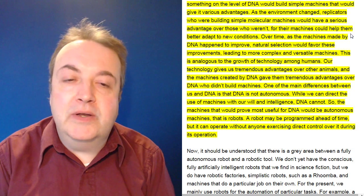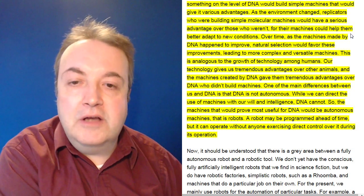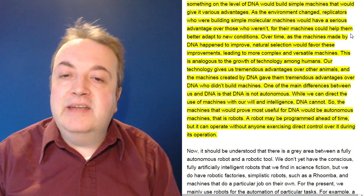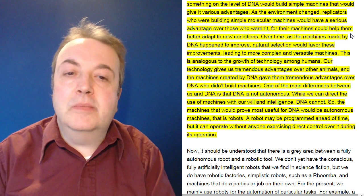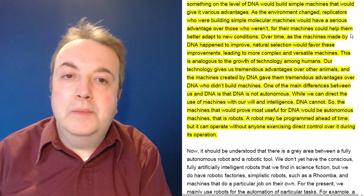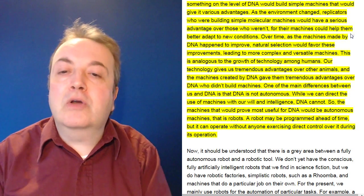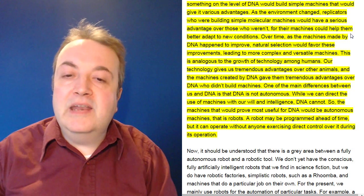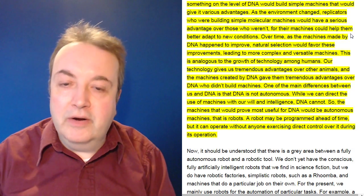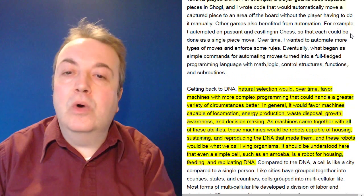And the machines created by DNA gave them tremendous advantages over DNA who didn't build machines. One of the main differences between us and DNA is that DNA is not autonomous. While we can direct the use of machines with our will and intelligence, DNA cannot. So the machines that would prove most useful for DNA would be autonomous machines, that is robots. A robot may be programmed ahead of time but it can operate without anyone exercising direct control over it during its operation.